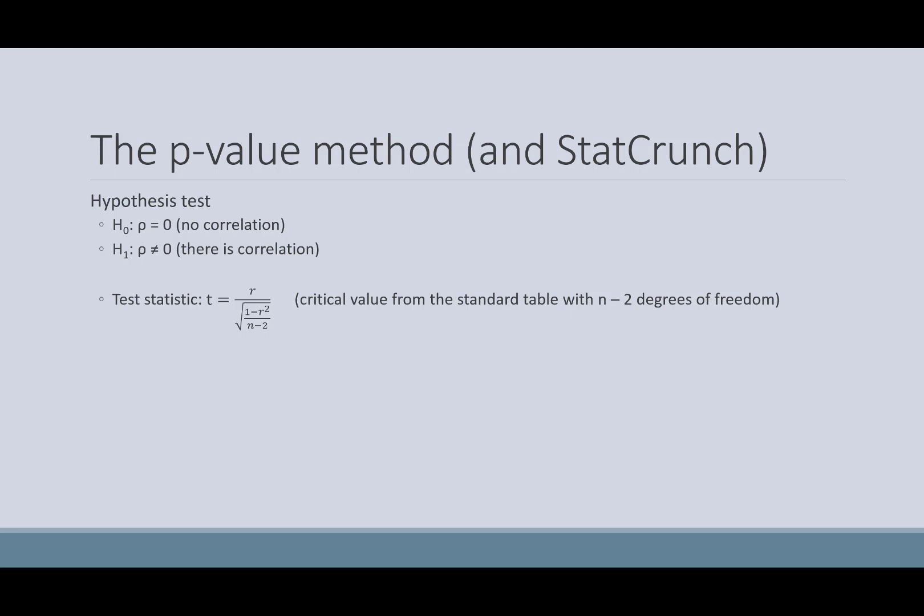So, we could still do the critical value method using StatCrunch and calculating our test statistic, but we're going to go ahead and look at the p-value.